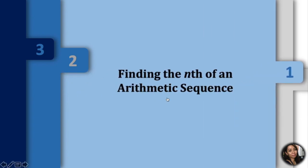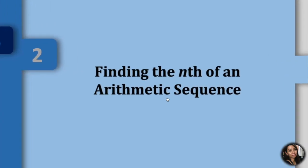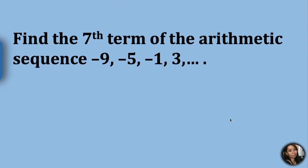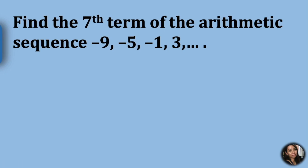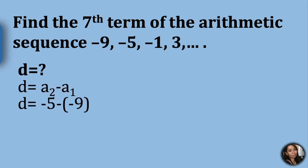Let's find the nth term of an arithmetic sequence. Let's find the seventh term of the arithmetic sequence: negative 9, negative 5, negative 1, 3, and so on. To do this, we need to get our common difference. We have to choose any two consecutive terms. I will use a sub 2 and a sub 1. d equals negative 5 minus negative 9, and our d here is equal to 4.